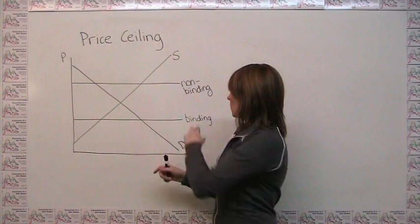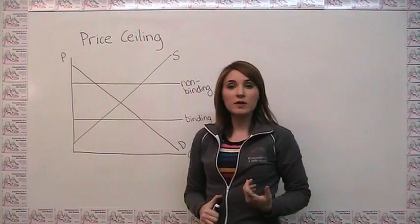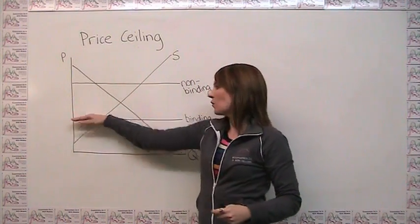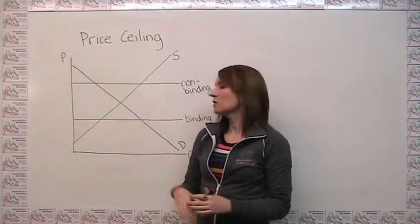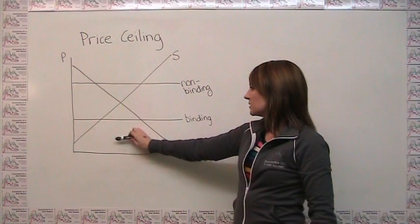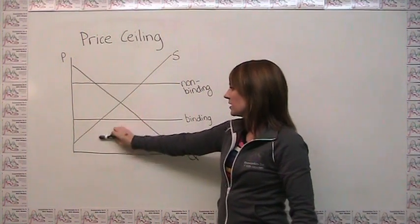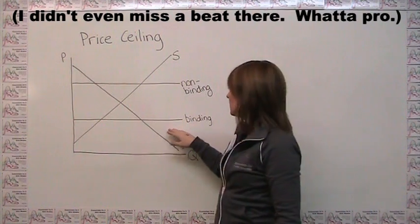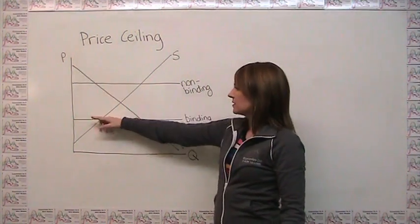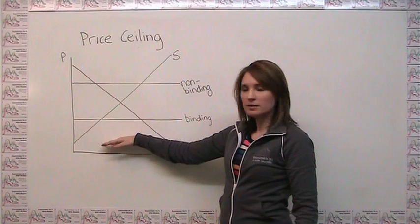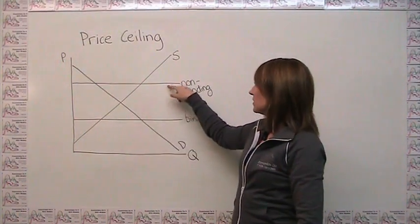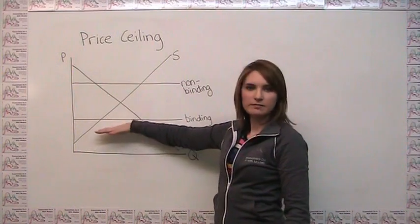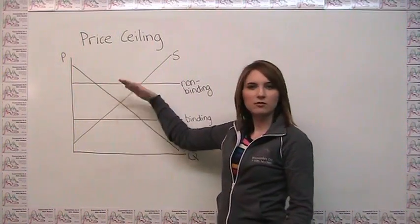When we set a price ceiling, which we represent as a horizontal line on our supply and demand diagram because it happens at one particular price, what we're really saying is you can only be in this range down here in terms of prices. So for example here, the only allowable prices are from this line down, and for this price ceiling here, the only allowable prices are from this line down. It really is like a ceiling or a roof.